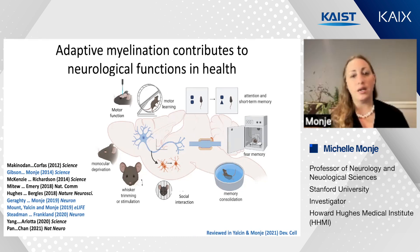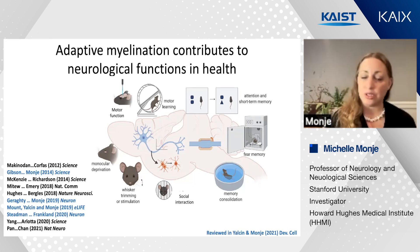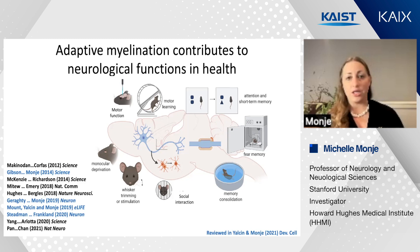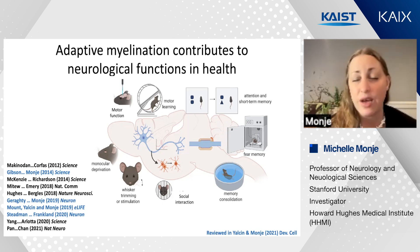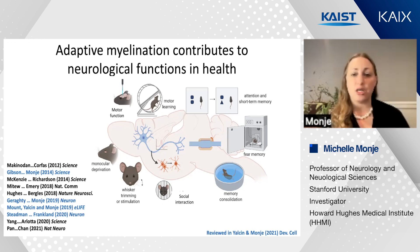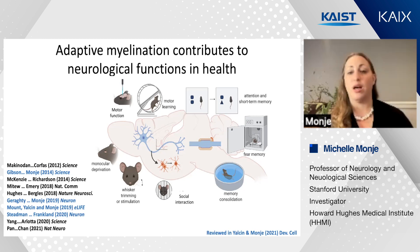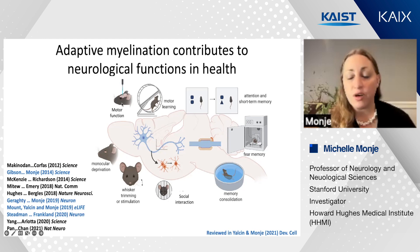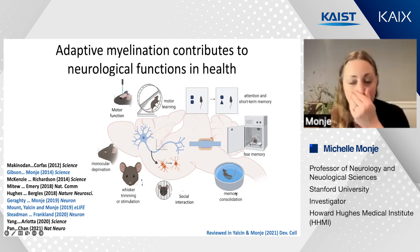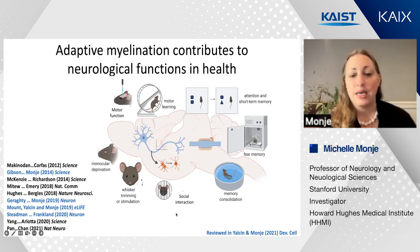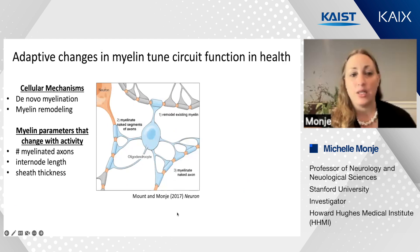That gives us a molecular handle to ask questions about how activity-regulated myelination contributes to neural circuit function in health and disease. Using this strategy, we and others—using either conditional deletion of TrkB from oligodendroglial cells or deletion of MRF, a transcription factor required for oligodendroglial differentiation—have uncovered roles for activity-dependent myelin plasticity across a range of neurological functions, including motor function, motor learning, attention, short-term memory, memory consolidation, spatial memory, fear memory consolidation, and social interactions.